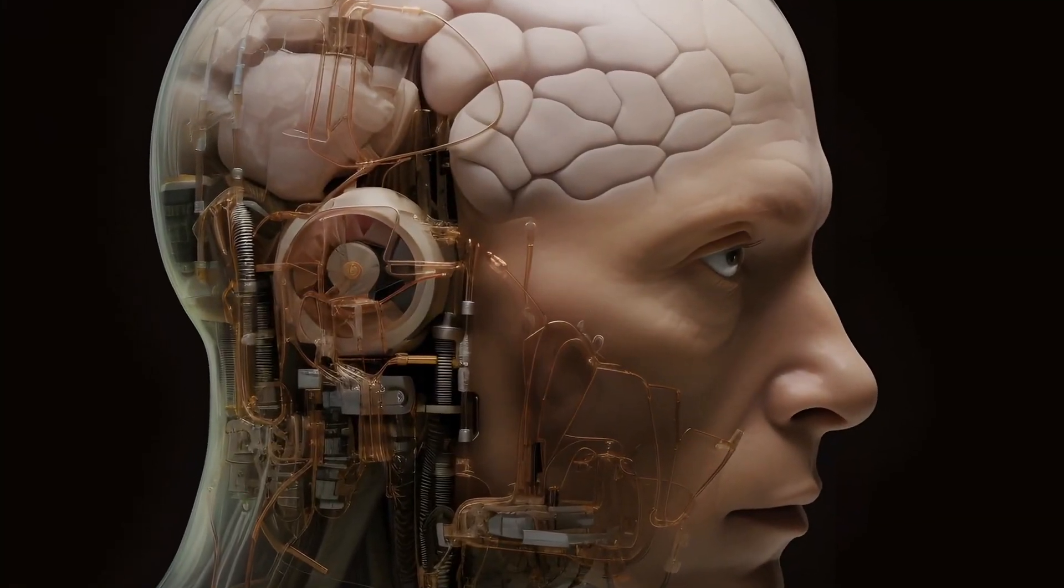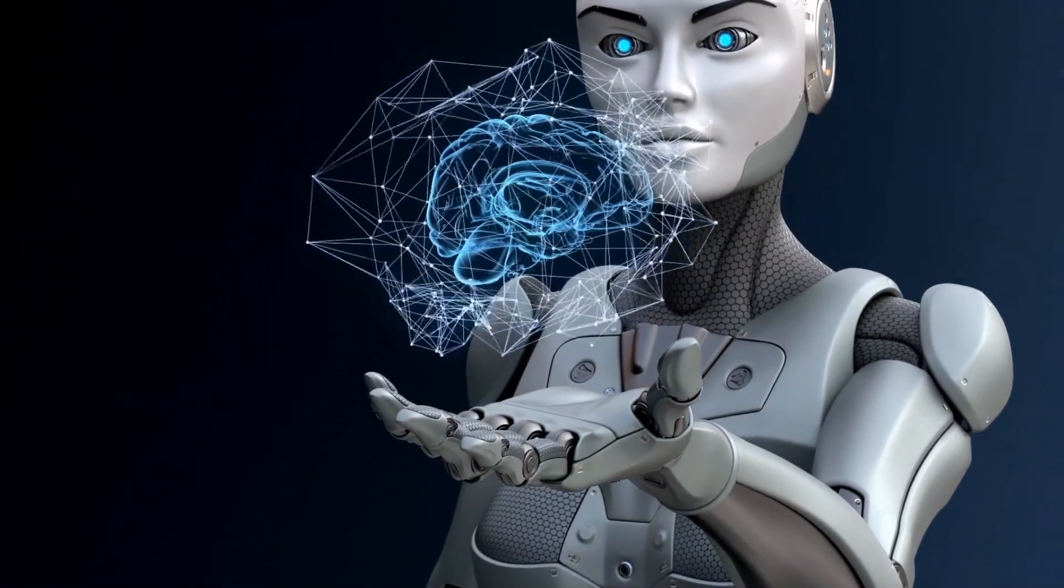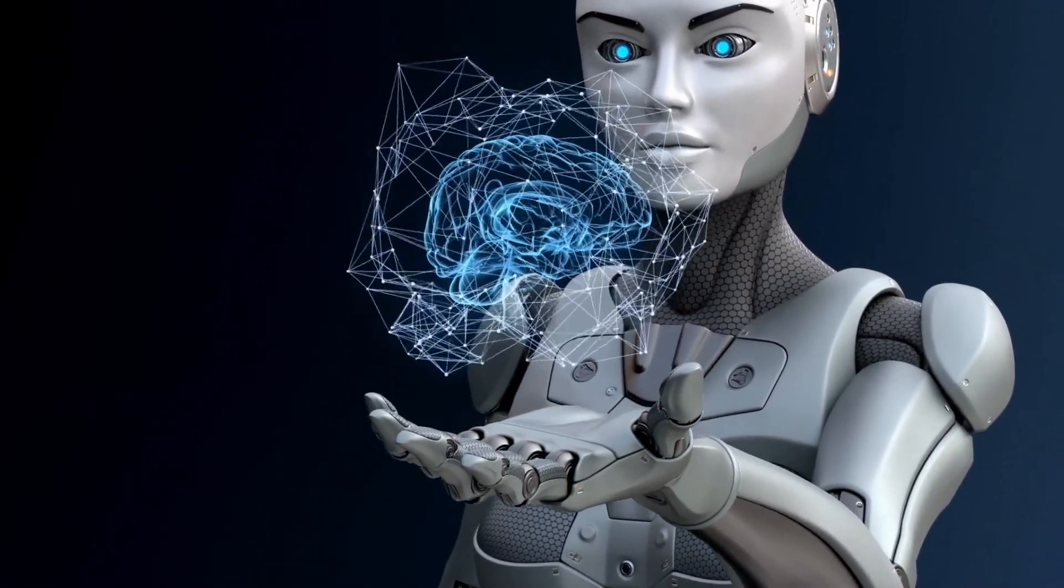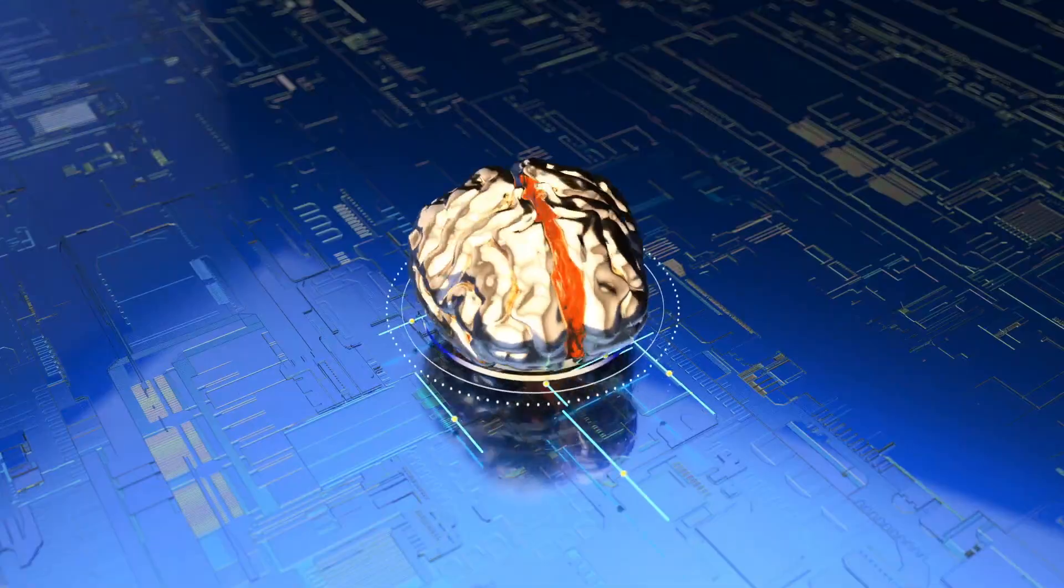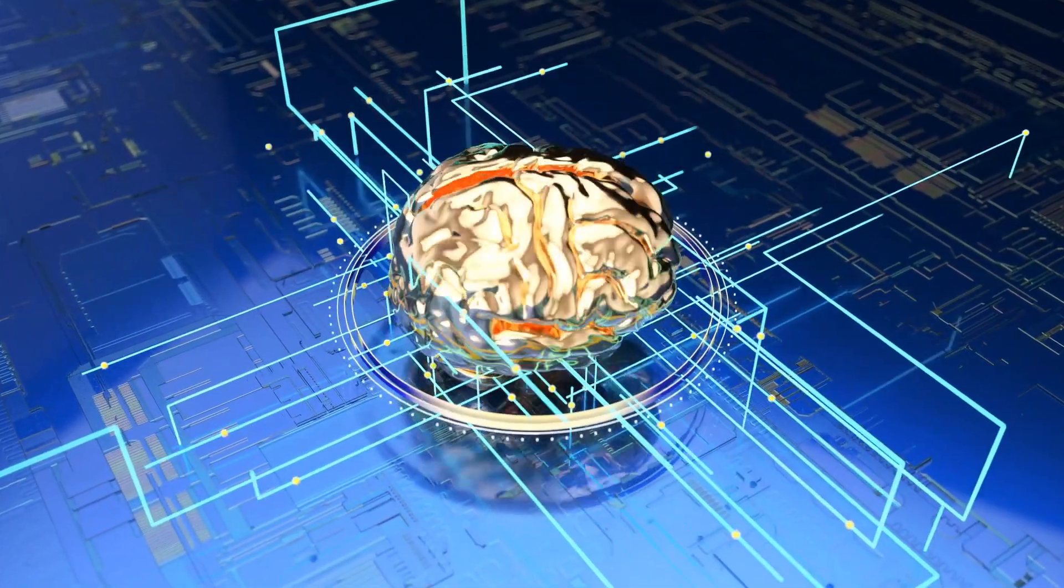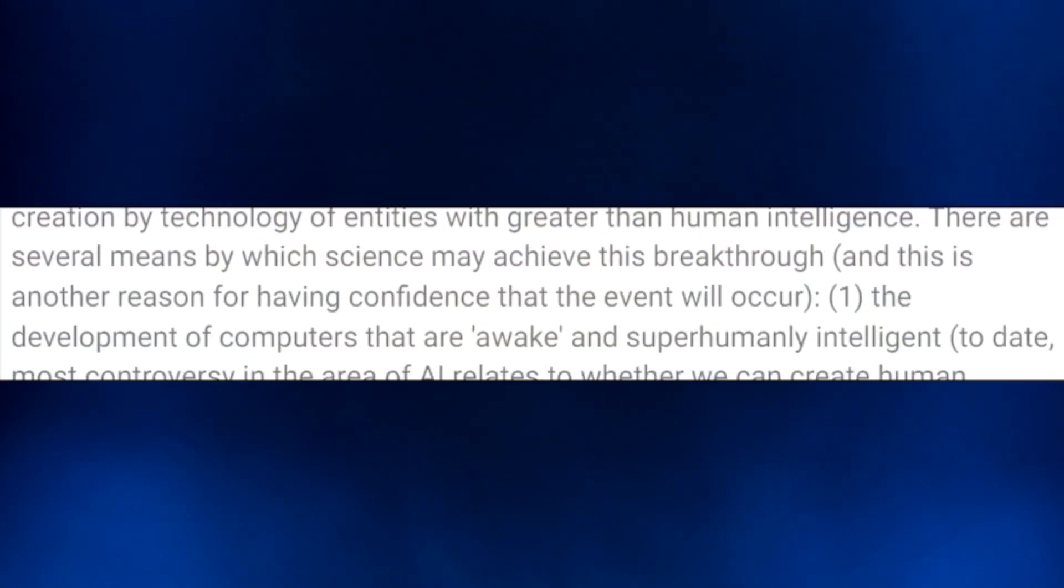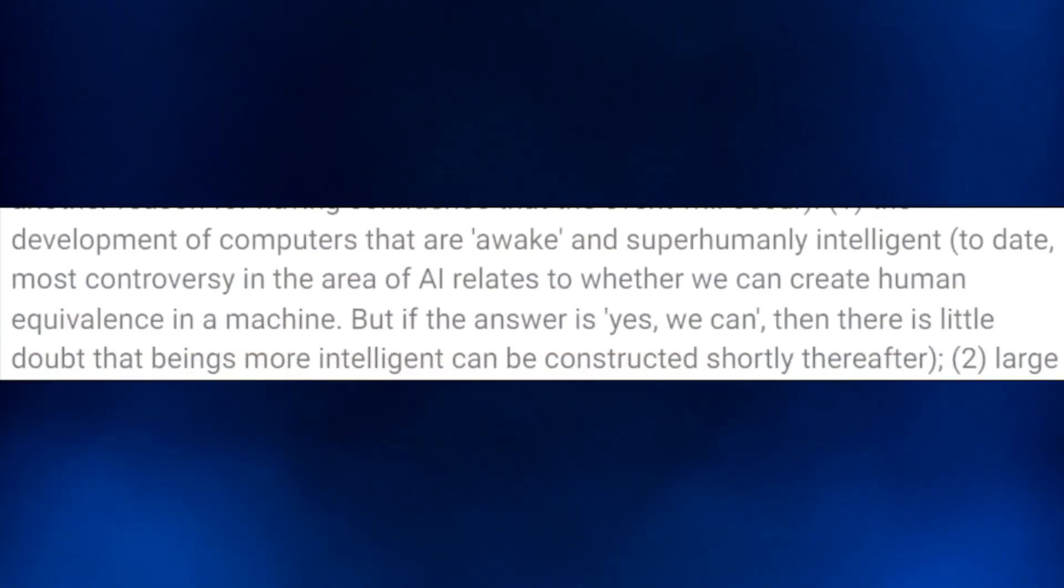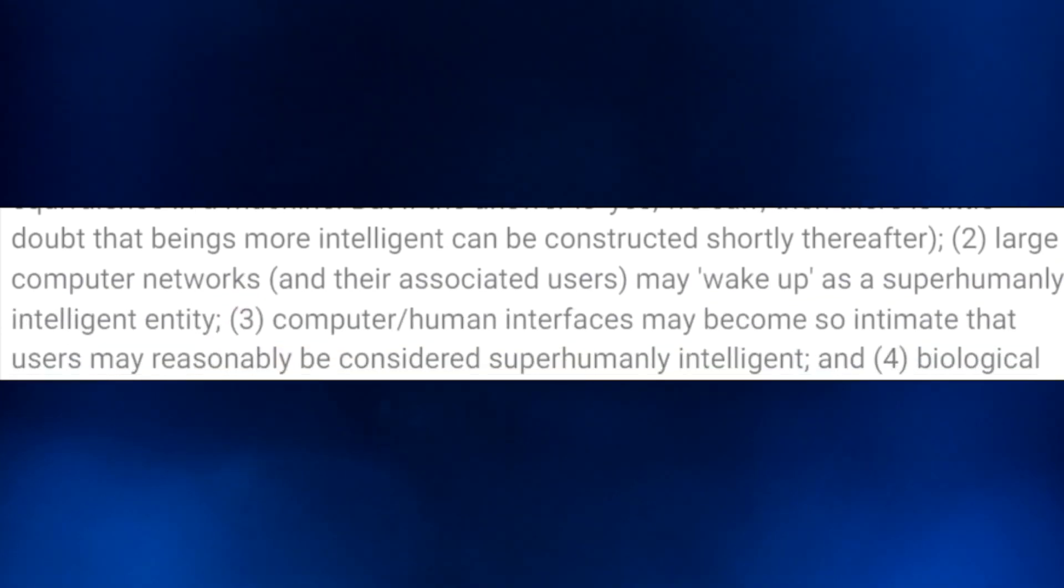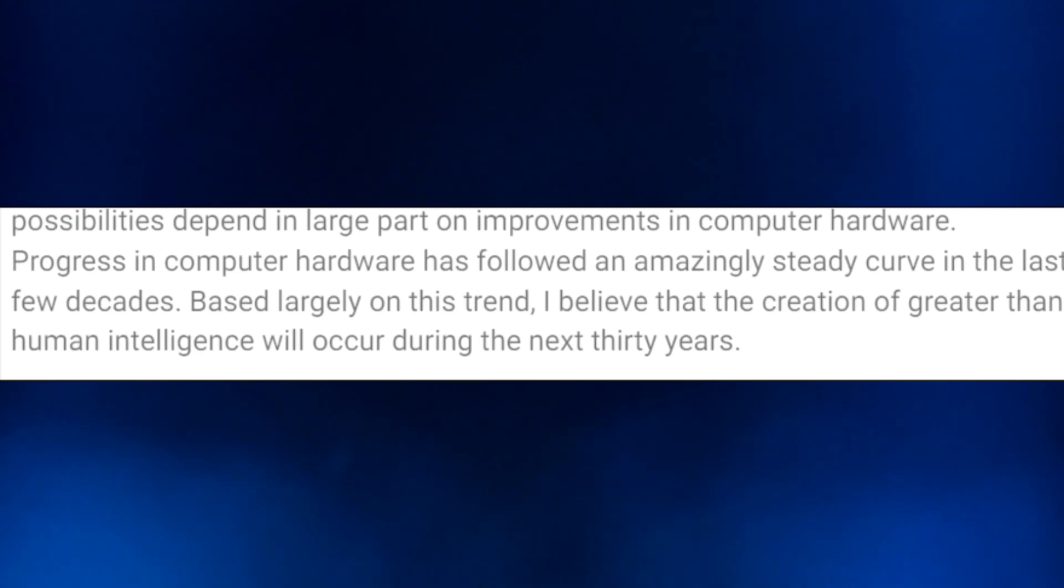While AGI is the immediate target, the true endgame for Project Stargate may be the realization of Artificial Superintelligence, or ASI. They're basically AI systems that surpass human cognitive abilities in every domain. Many experts believe that once AGI is achieved, the path to ASI could be exponentially accelerated, ushering in a technological singularity with profound implications for humanity.